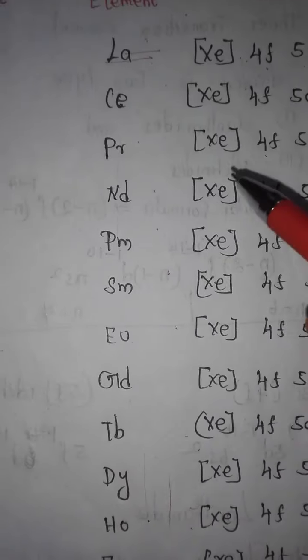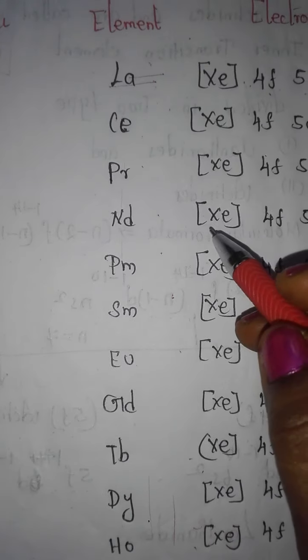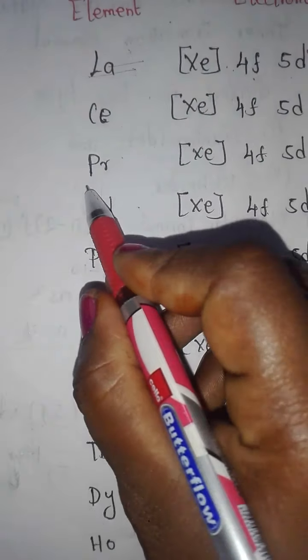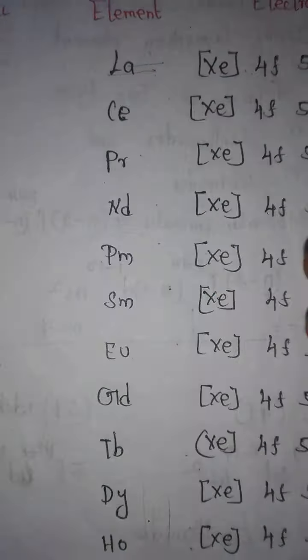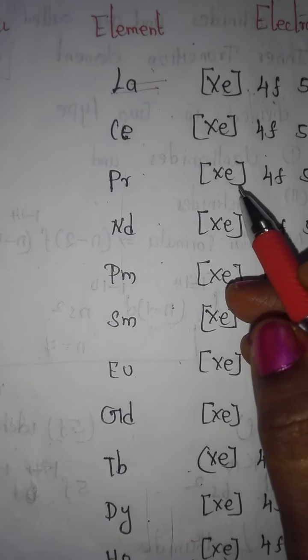Particularly, promethium is radioactive. Promethium belongs to the radioactive group among the lanthanides.